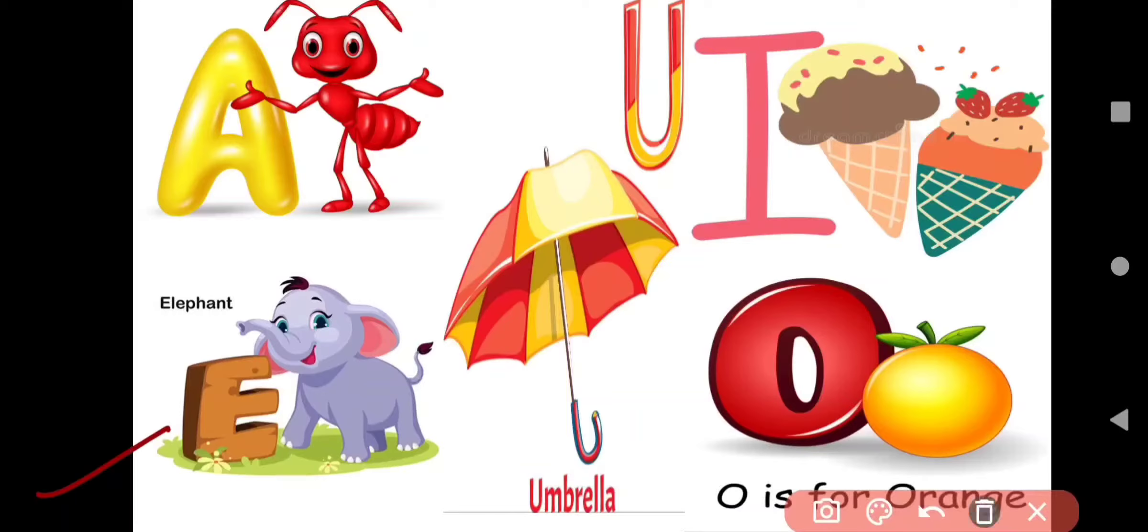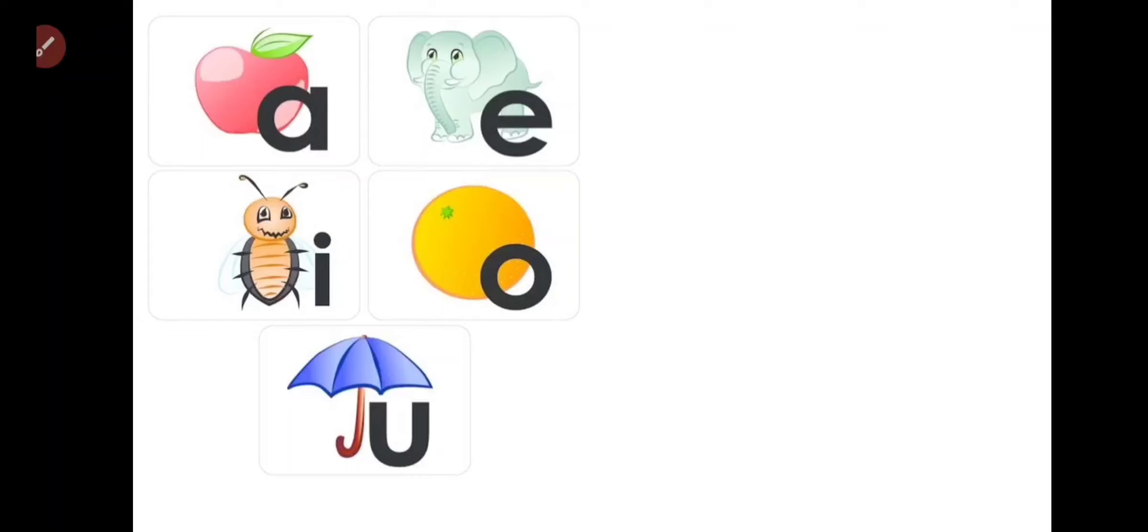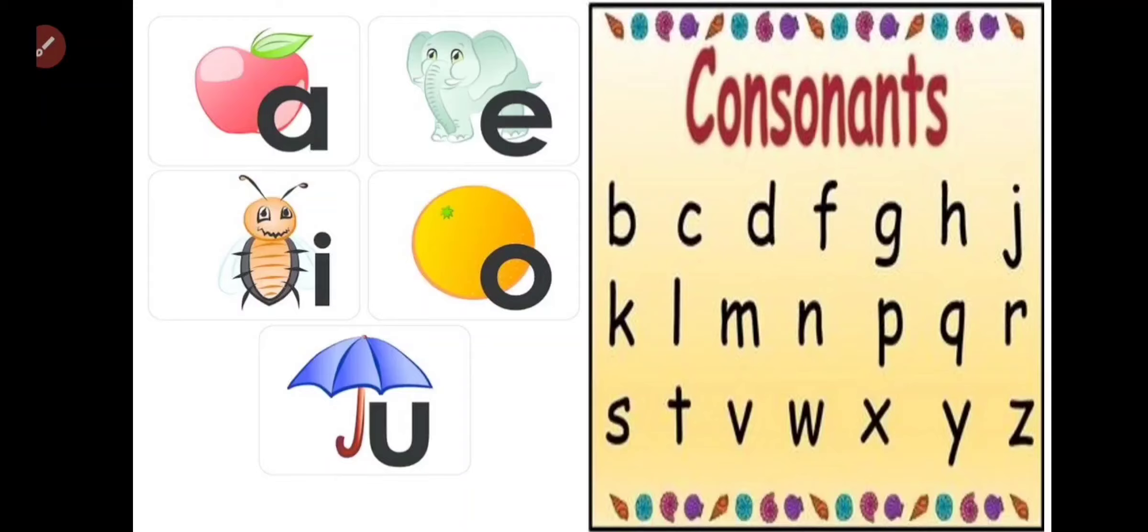Like here: A, E, I, O, U. Here we have five letters. So students, A, E, I, O, U are vowels. In English grammar, we have five vowels and the rest of the letters will be consonants.